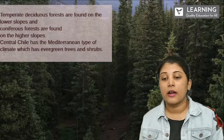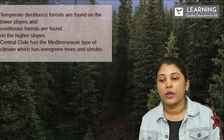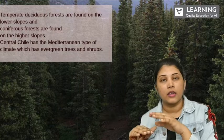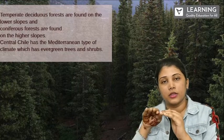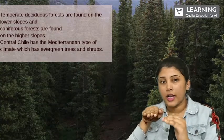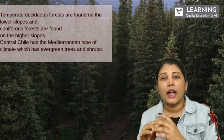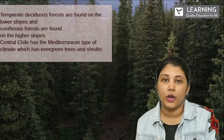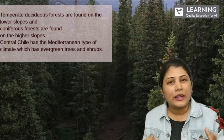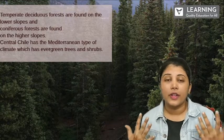Temperate deciduous forests are found on the lower slopes and coniferous forests are found on the higher slopes. Just above sea level you will find deciduous forest, and above that, coniferous forests. Coniferous trees have a triangular shape — like a Christmas tree. So that shape is known as coniferous forest.